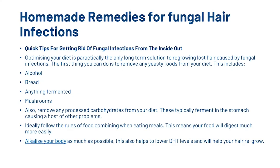A few tips on getting rid of fungal infections from the inside out: optimising your diet is practically the only long-term solution to regrowing lost hair caused by fungal infections. Remove any yeasty foods from your diet — this includes alcohol, bread, anything fermented, and mushrooms. Also remove any processed carbohydrates from your diet, as these typically ferment in the stomach, causing a host of other problems. Ideally, follow the rules of food combining when eating meals so that your food digests more easily. Alkalise your body as much as possible, as this helps lower DHT levels and will help your hair regrow.